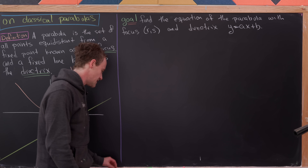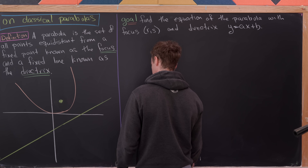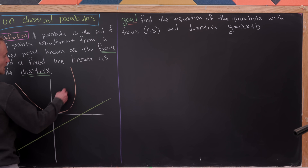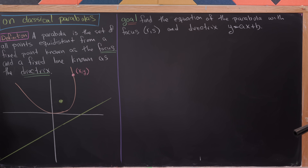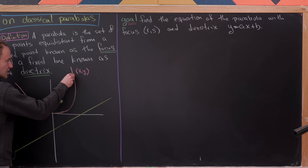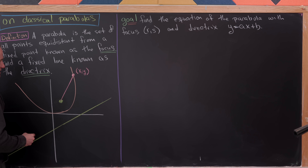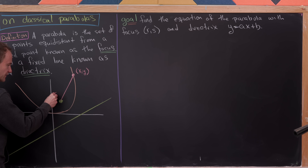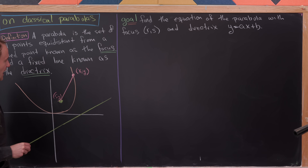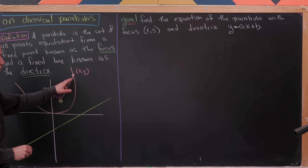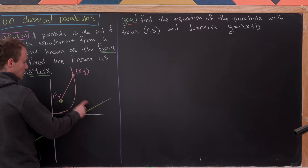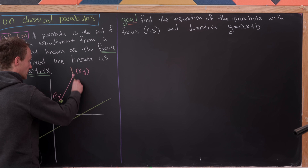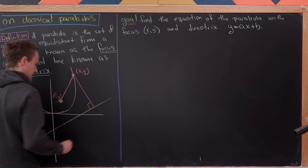Let's draw on our picture to make some measurements. This arbitrary point on our parabola is (x, y). We have a distance from this point to our focus (r, s). We also need to measure the distance from this point to the line. There are infinitely many ways to measure that, but we pick the shortest path, which intersects the line at a 90 degree angle.